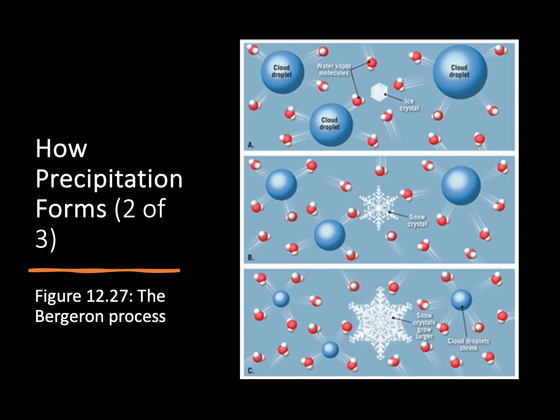This image shows the Bergeron process. There are some cloud droplets that are in the air next to much smaller water vapor molecules. Some of this water vapor is going to attach to the ice crystal and it's going to start forming a new snow crystal. But over time that snow crystal is going to grow larger and larger as the cloud droplets shrink and more of the water vapor combines with the snow crystal. It's just going to grow larger and larger in size until eventually it's heavy enough to fall from the cloud.